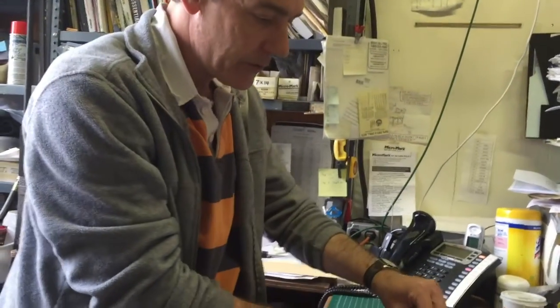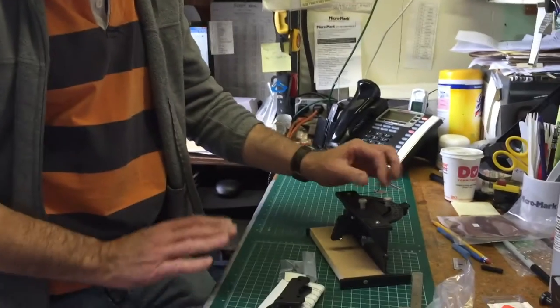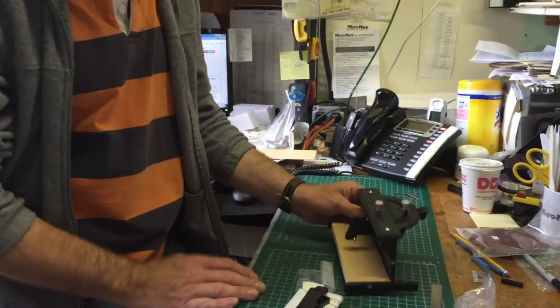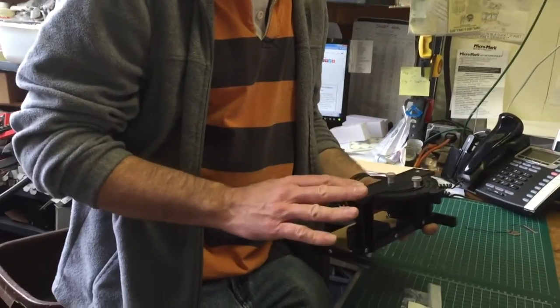This is the Miterite miter box. It's very nice. You can do very precise work with it. It's lightweight. It is ABS plastic.